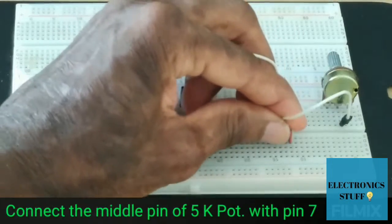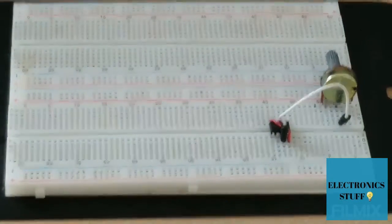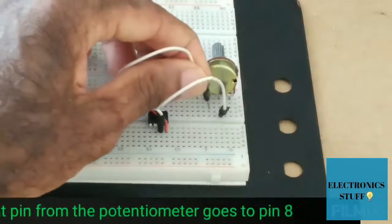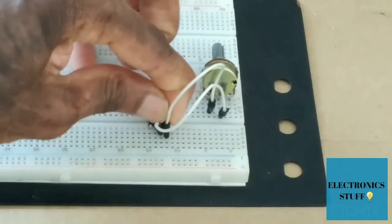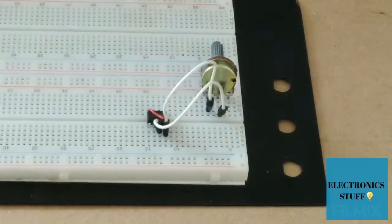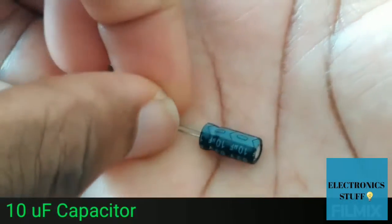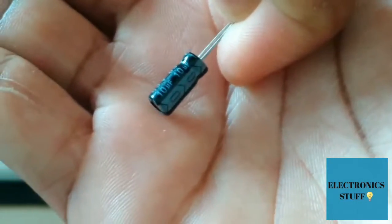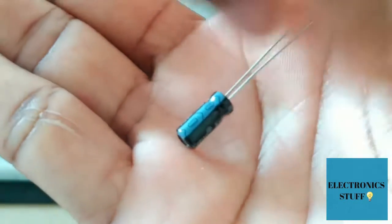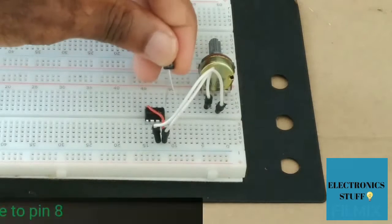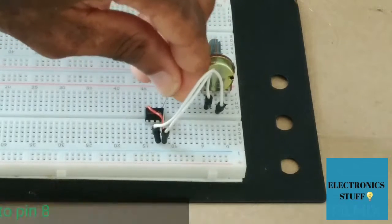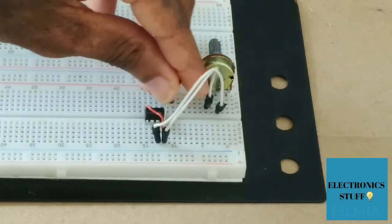Pin 7 of the IC. One of the outer pins of the pot is going to pin 8. We need a 10 microfarad capacitor. The negative pin is going to pin 1 and positive pin to...